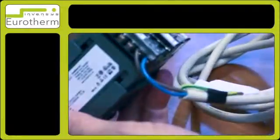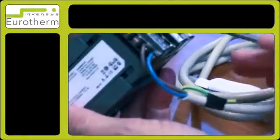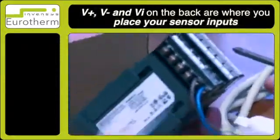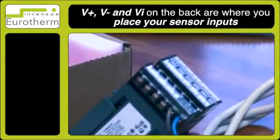On the back of the controller also, you will notice we have V-plus, V-minus, and VI. This is where you place your sensor inputs.